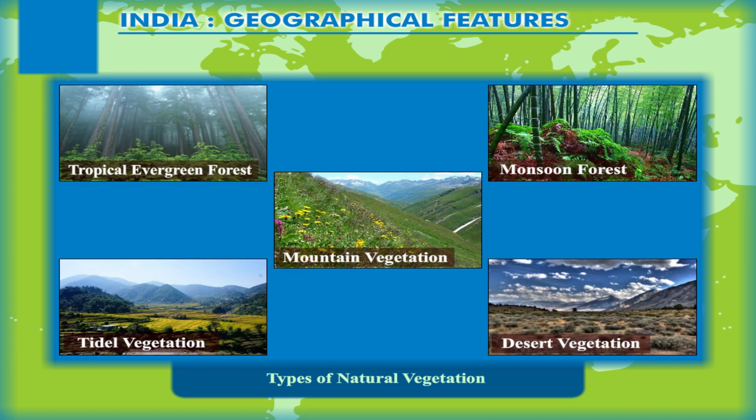The five types are: tropical evergreen forests, monsoon forests, desert vegetation, tidal vegetation, and mountain vegetation.